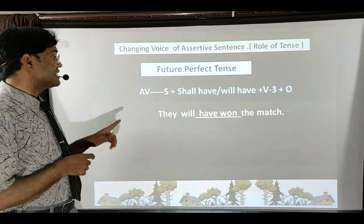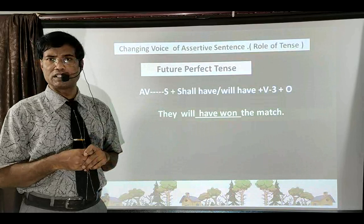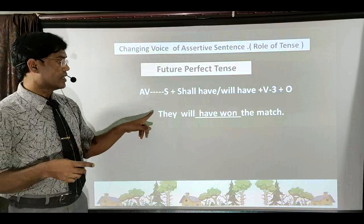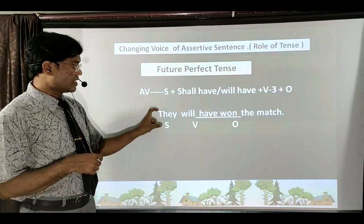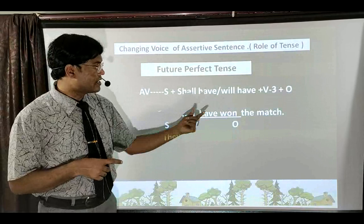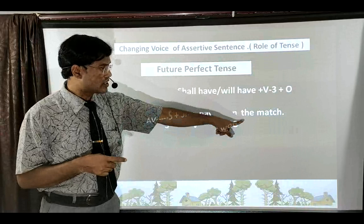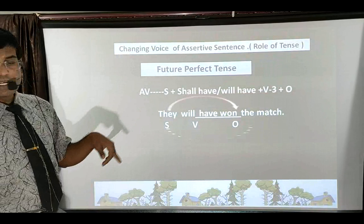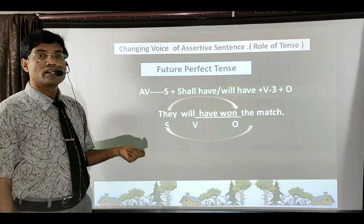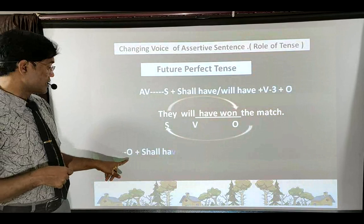Future Perfect Tense: active voice formula is Subject + shall have/will have + third form of verb + Object. Example: 'They will have won the match.' Identify: subject is 'they', verbal group is 'will have won', object is 'the match'. When we identify these three things, replacing subject and object becomes easy. Passive voice formula: object first, then shall have/will have, then 'been' (extra word for perfect tense), then third form of verb, then 'by' with objective case of subject.